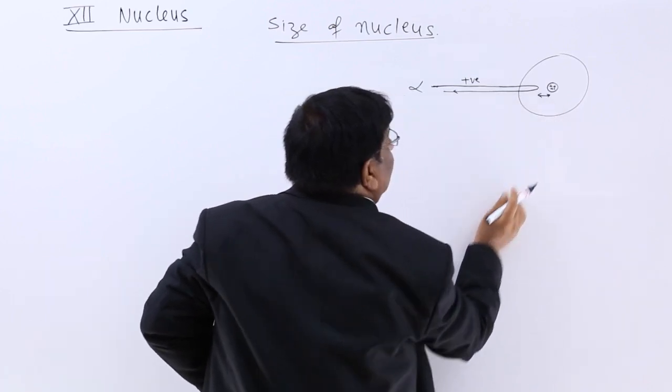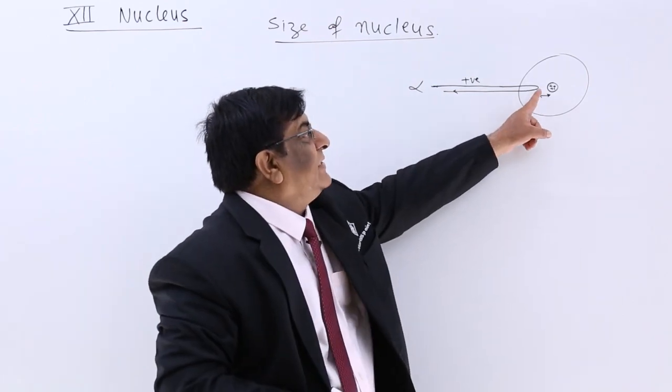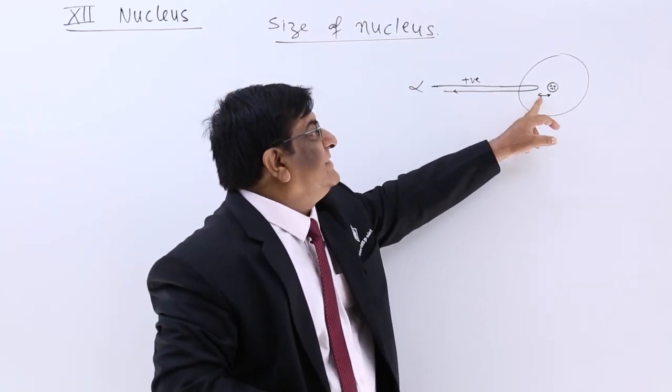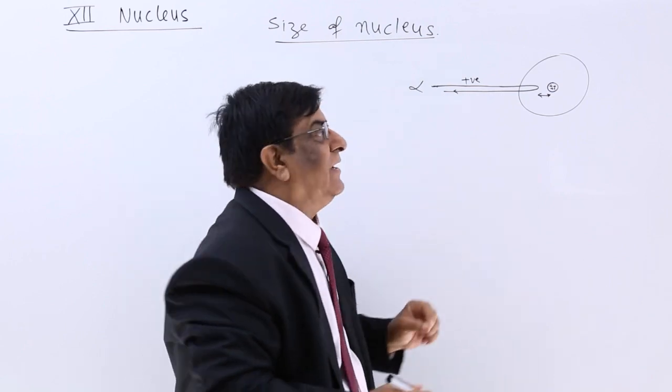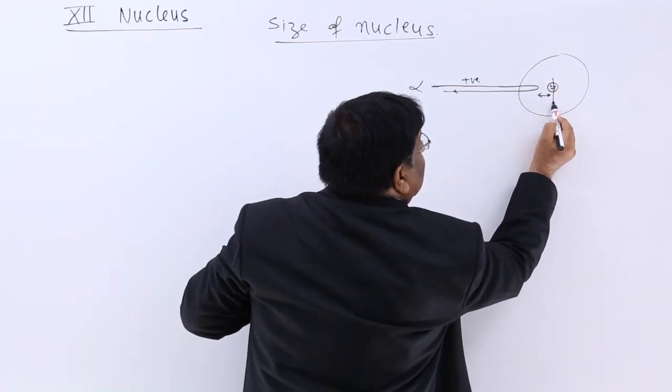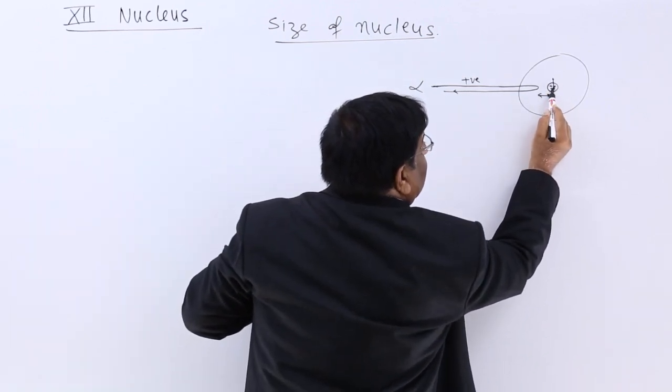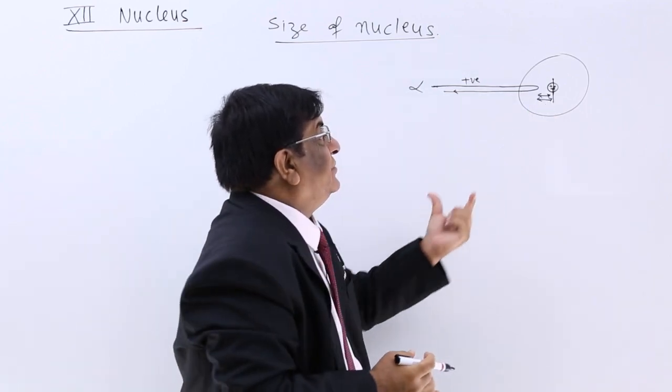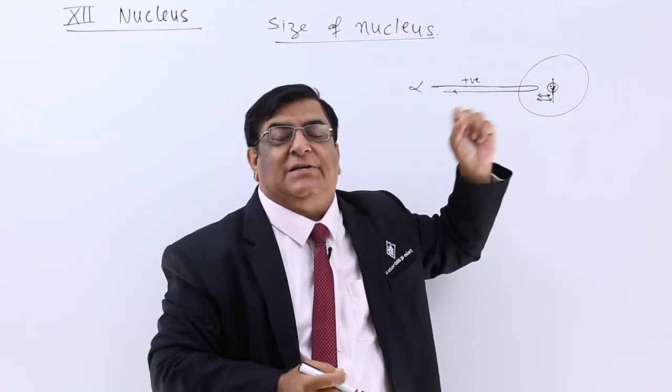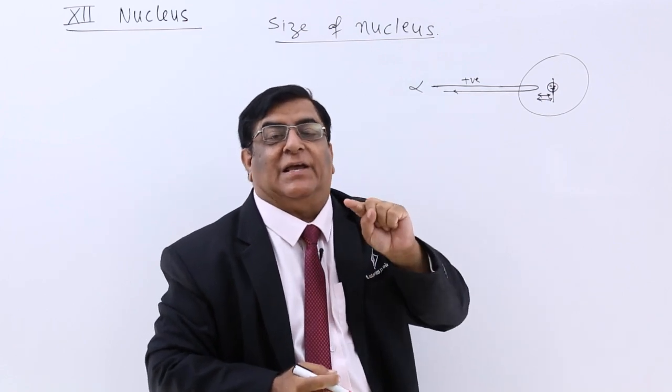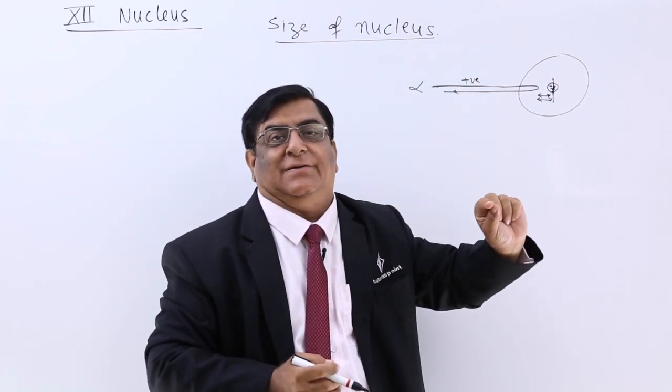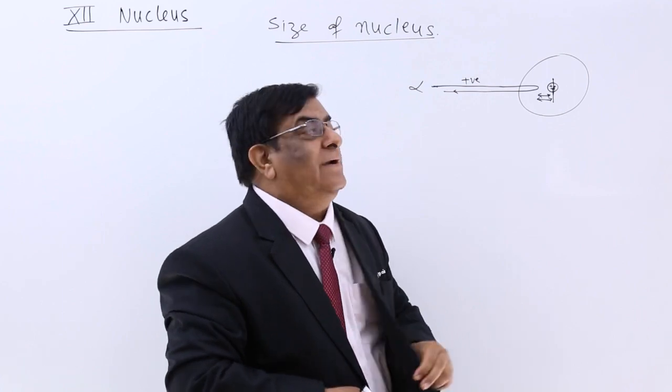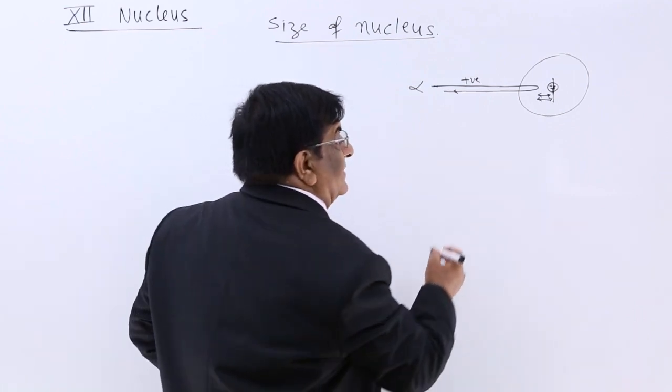This distance, without striking, they are coming back. So this distance gives us an idea that the size of nucleus should be within this range. That range gives only an idea that size should be smaller than that, not larger than that. And this we did with alpha particles.